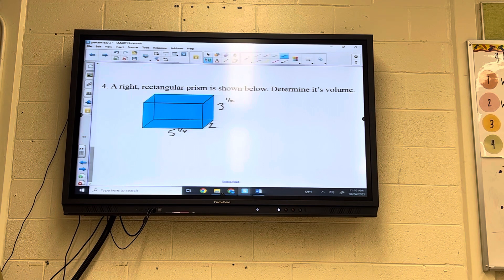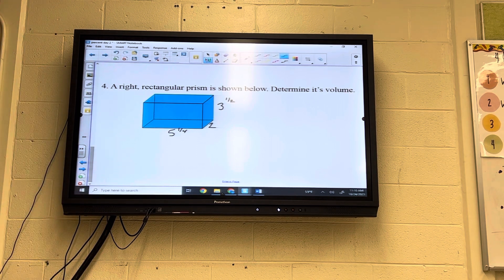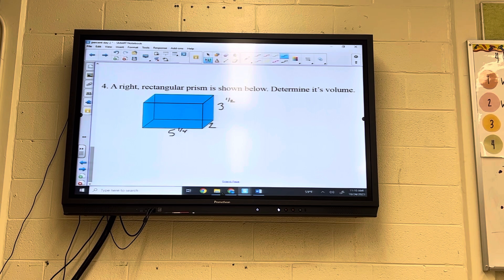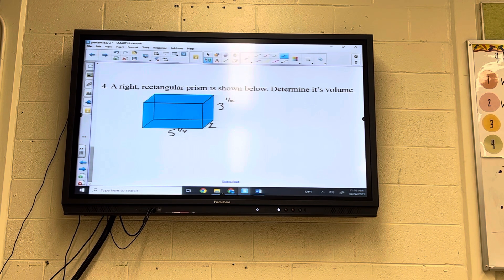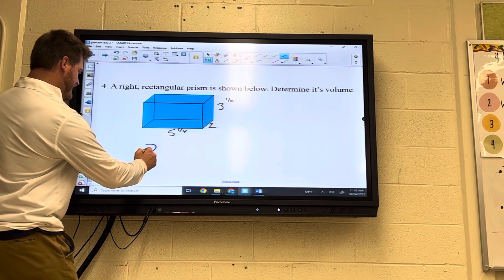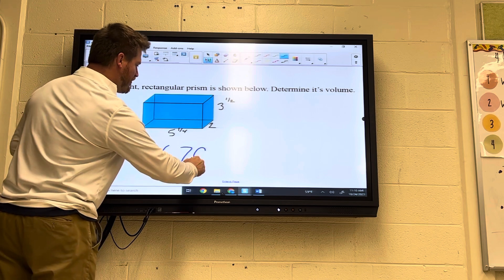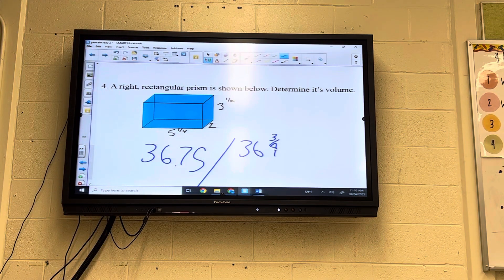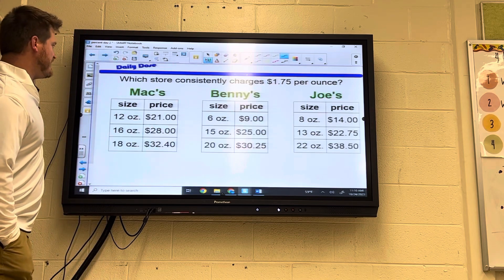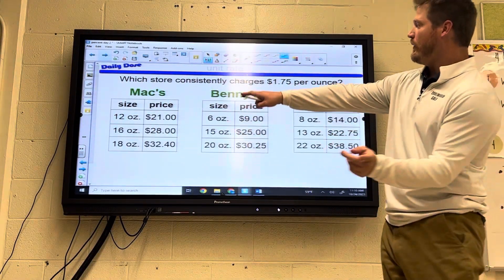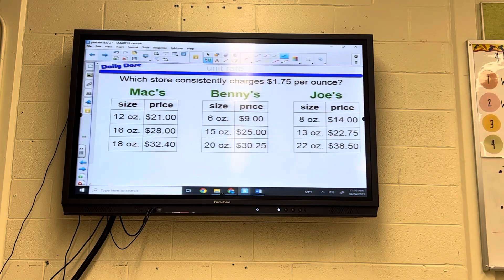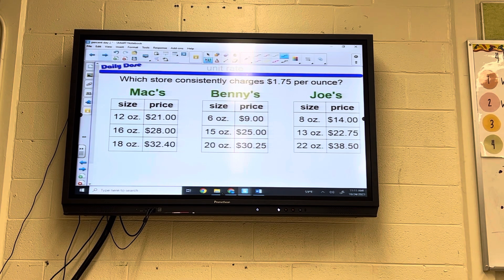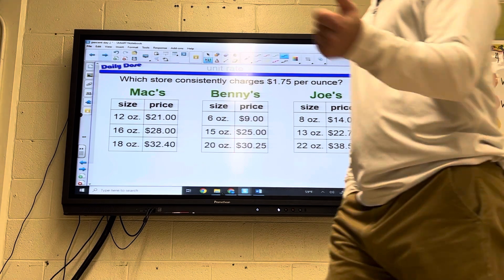Last but not least, a right rectangular prism was shown below. Determine its volume. To find the volume, it is length times width times height. I believe 5.25 gives you 36.75. Or if you did the fraction, it's also going to be 36.75. So hopefully you went four for four. Go ahead and put the big sheet away in your folder and move on to the daily dose. Pause the video and figure out which one of these stores charges $1.75 per ounce for each size jar. Consistently, they've got to all be the price. So have it on your own first.